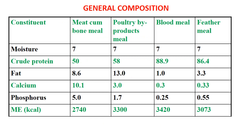Here we can see the general composition of different products comparatively. Moisture content is 7% across meat-cum-bone meal, poultry byproducts, blood meal, and feather meal. Crude protein is about 50% in meat-cum-bone meal, 58% in poultry byproducts, 88% in blood meal, and 86% in feather meal. Fat content is 8.6% in meat-cum-bone meal, 13% in poultry byproducts, 1% in blood meal, and 3.3% in feather meal. Calcium is 10.1% in meat-cum-bone meal, 3.3% in poultry byproducts, and 0.33% in feather meal. Phosphorus is high in meat-cum-bone meal at 5%, while others are 1.7%, 0.25%, and 0.55%. Energy content in meat-cum-bone meal is a little less due to the presence of bones.